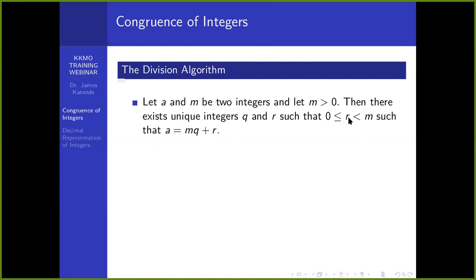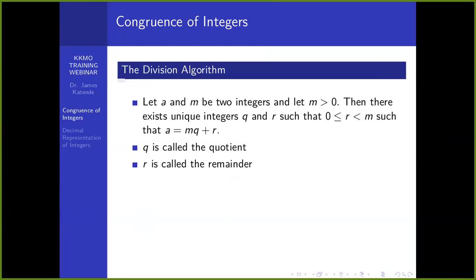This condition here — 0 less than or equal to R, strictly less than M — is very important, because that is what guarantees that Q and R are unique for any pair of integers A and M. Q here is called the quotient, and R is called the remainder. I have avoided the proofs for this. In the interest of time, maybe later on, if anyone needs the proof, you can let me know and we can make it available.